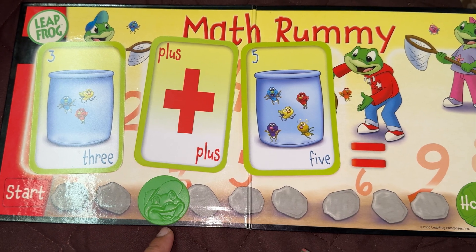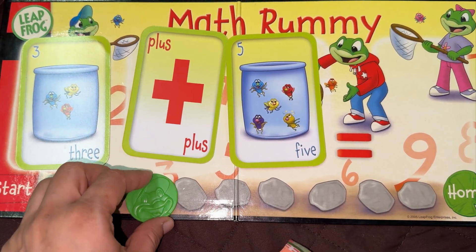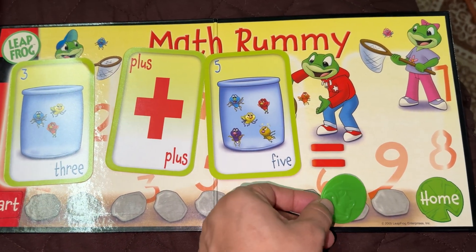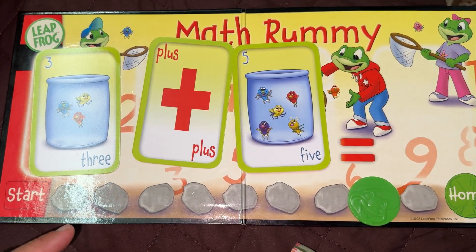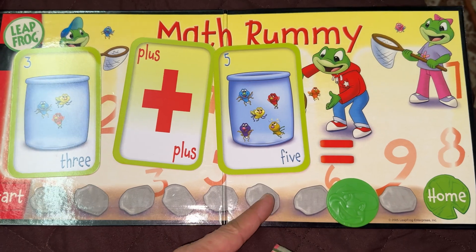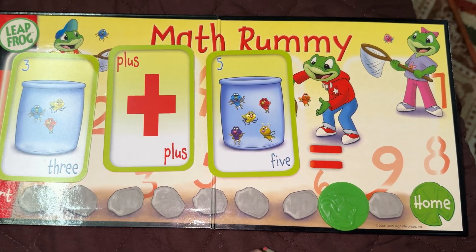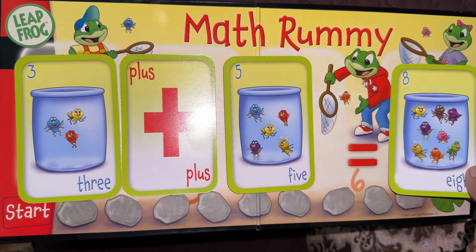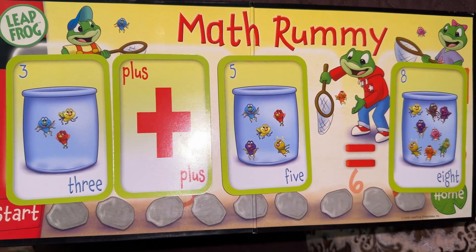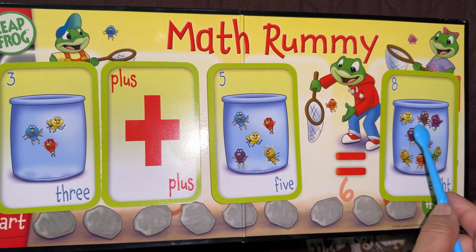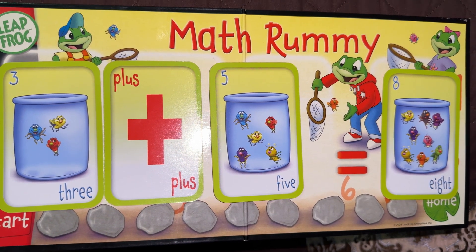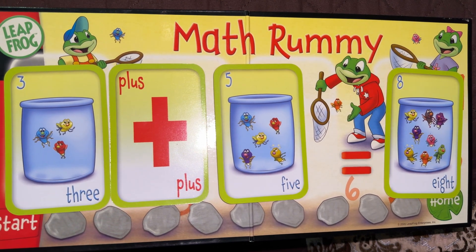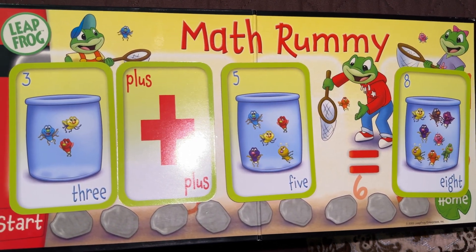With LeapFrog, we have three stones plus five stones: three, four, five, six, seven, eight. Let's count the stones: one, two, three, four, five, six, seven, eight — eight stones. Now let's count the equal number of mosquitoes: one, two, three, four, five, six, seven, eight — eight mosquitoes!